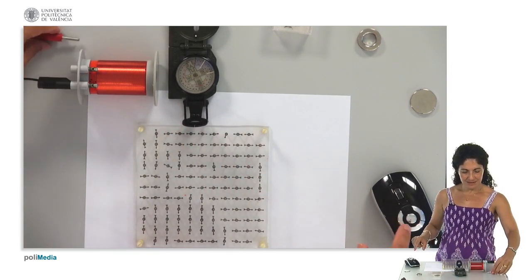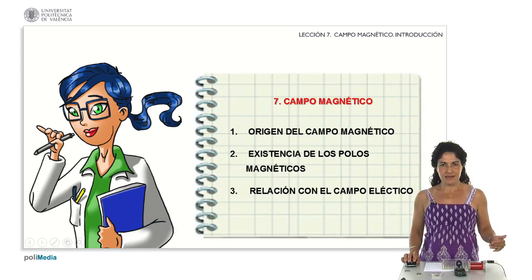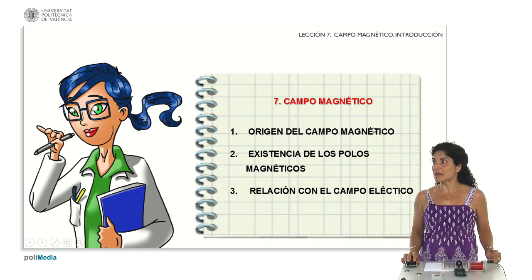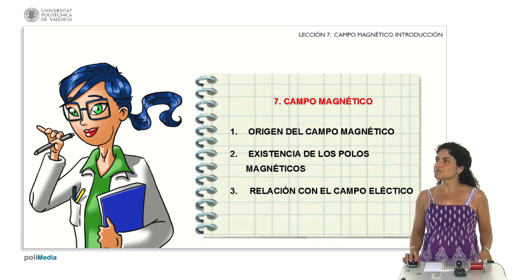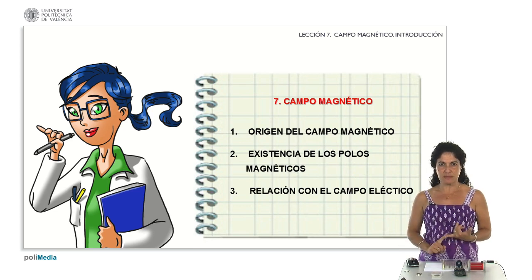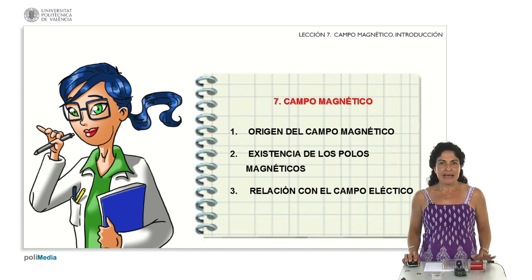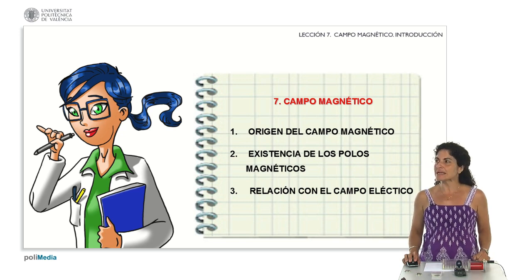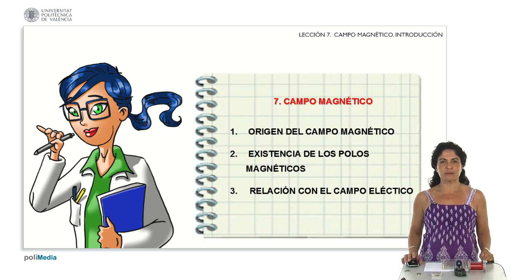Let's finish this study of the magnetic field by reviewing all the ideas that have arisen. We have seen the origin of the magnetic field — the natural origin from minerals such as magnetite, but we can also create it ourselves from permanent magnets made from metals such as iron or steel. We must always keep in mind that any magnet will always have two magnetic poles. And thanks to the experiences of Oersted, the relationship between the electric field and the magnetic field has been established. We will continue in future presentations.